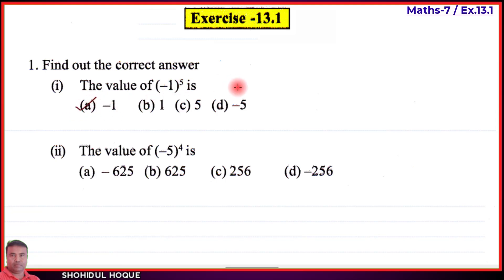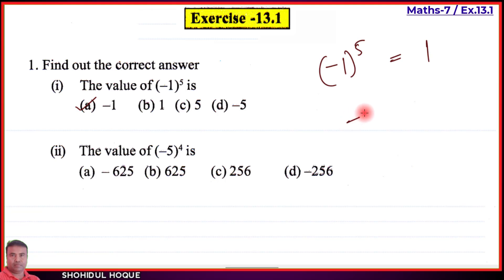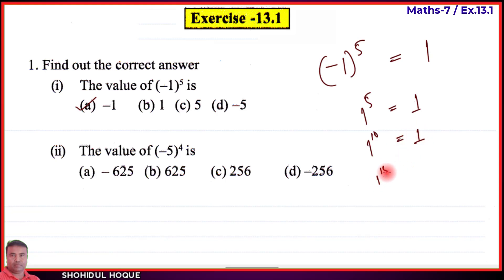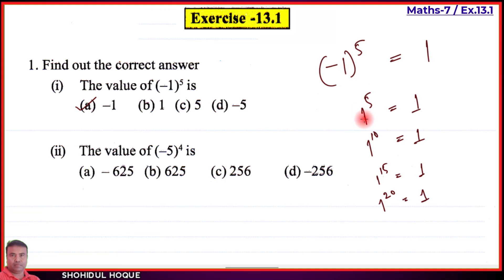Why is the answer minus one? The power is five. When the power is odd, we take minus one. One to the power 10 — the answer is one. One to the power 15 — the answer is one. One to the power 20 — the answer is one. So one to any power always gives one.